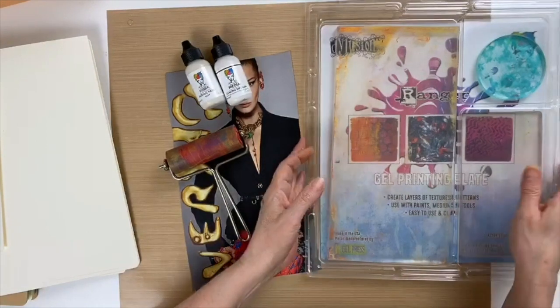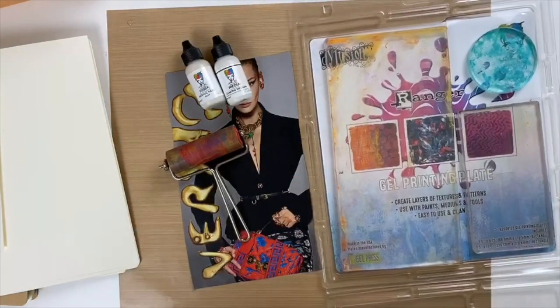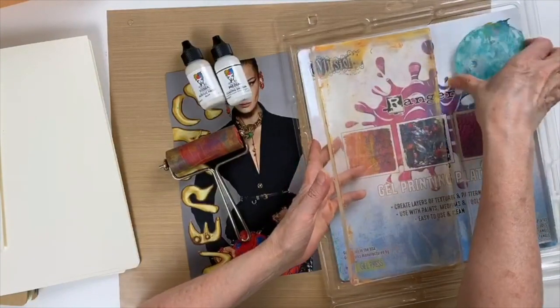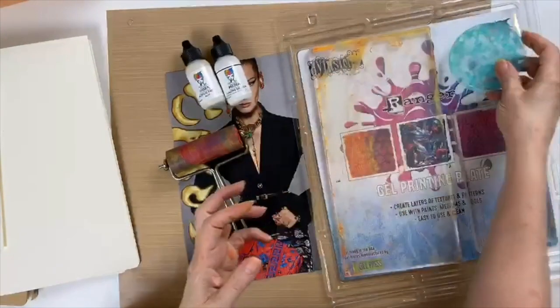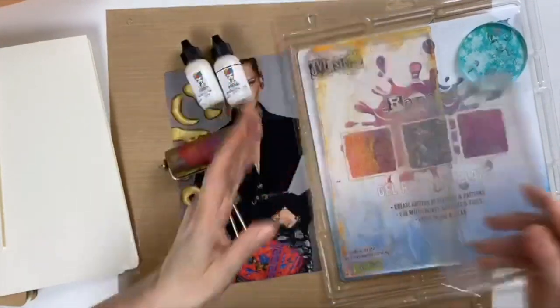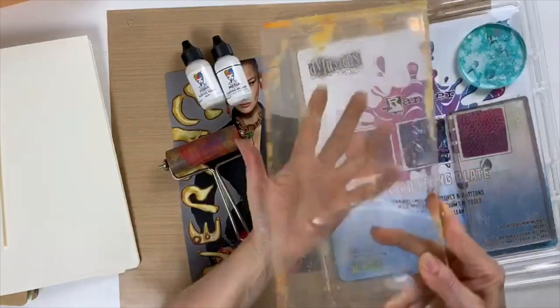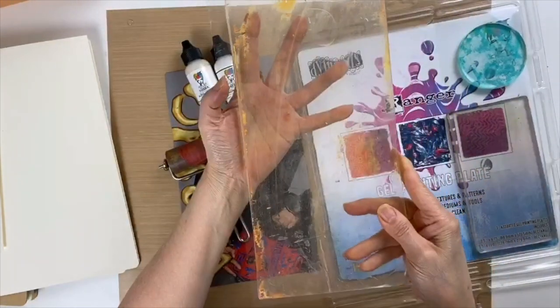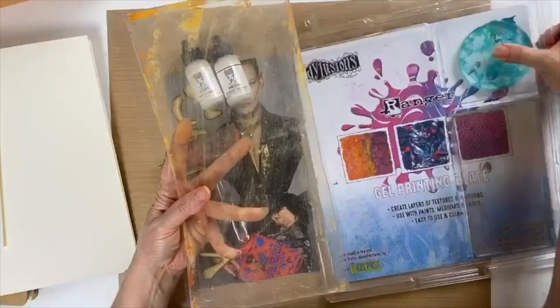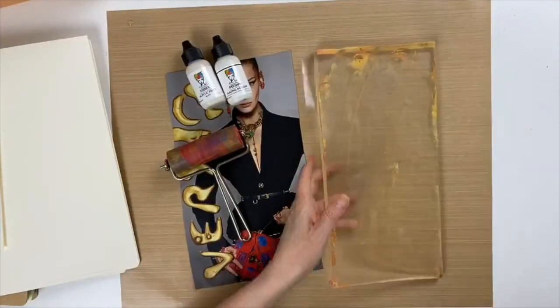So to begin, I'm using the three-pack assortment of gel plates. It comes with a small round circle and then a smaller rectangle and then a medium-sized rectangle, which is what I'm going to be using today. This also comes in a 9x11 gel plate if you like to decorate a big surface.